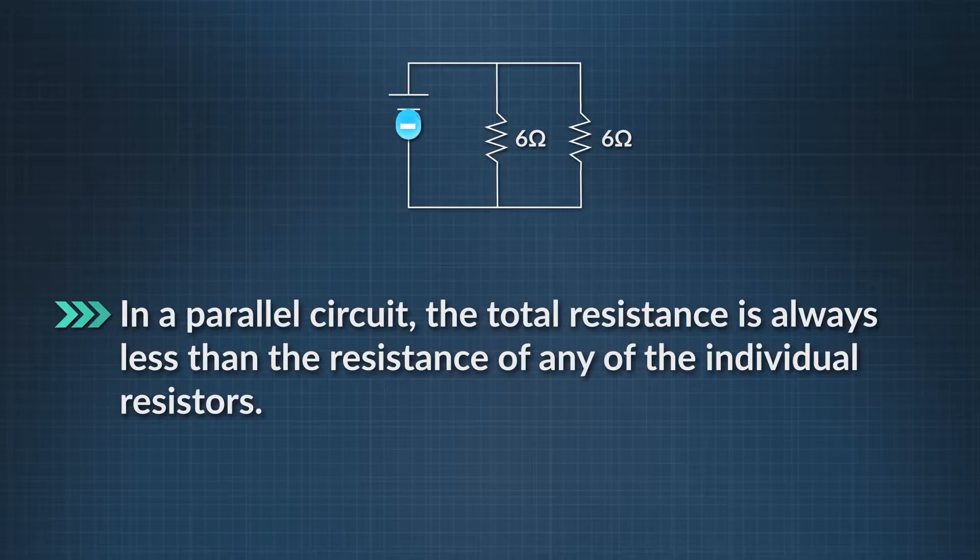That's always true in parallel circuits. Now that we know the total circuit resistance, we can figure out the overall circuit current using Ohm's Law.